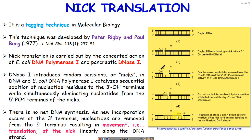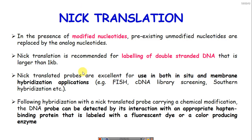During nick translation we use modified nucleotides — either radiolabeled nucleotides, biotinylated nucleotides, or digoxigenin-labeled nucleotides — so as to tag the resulting double-stranded DNA probe with modified bases.